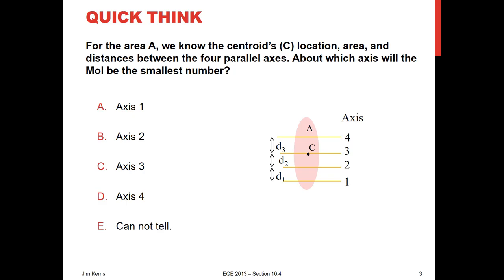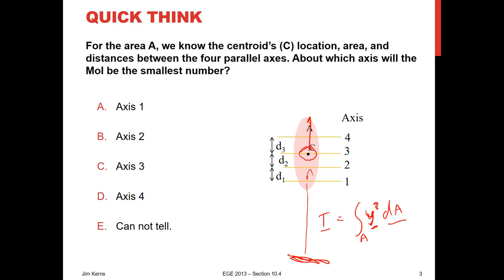A quick quiz: we have area A, the centroid is at C, we know the area and the distances between axes. About which axis will the moment of inertia be the smallest? The moment of inertia is the integral over the area of y-squared dA. No matter which axes we pick, the dA's are the same, but the y-squareds differ. Because it's y-squared, the further we get from the centroid, the bigger the number becomes. So the minimum is at the centroid — the moment of inertia is smallest at axis 3.